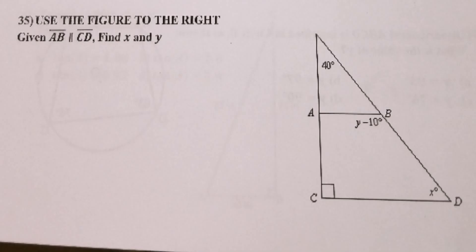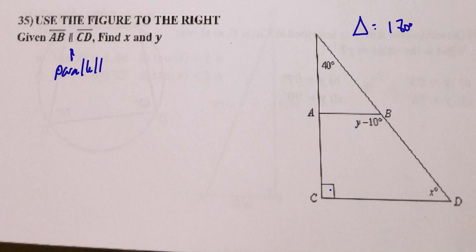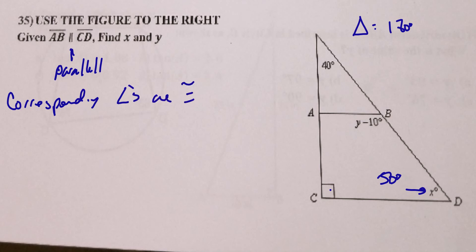Number 35: AB is parallel to CD. A triangle has 180 degrees, so if two angles are 40 and 90, then x = 50 degrees immediately. With two parallel lines, corresponding angles are congruent — that's why this 90 equals that 90. The 50-degree angle also corresponds across the parallel lines for the same reason.